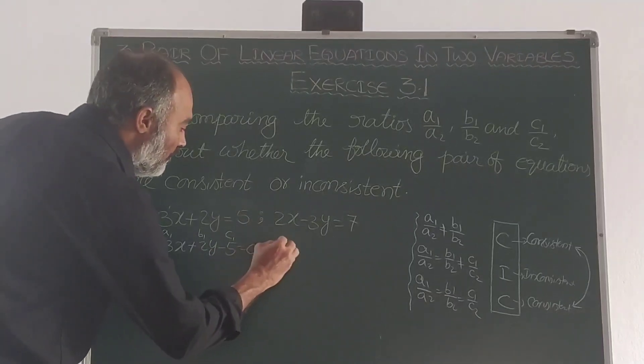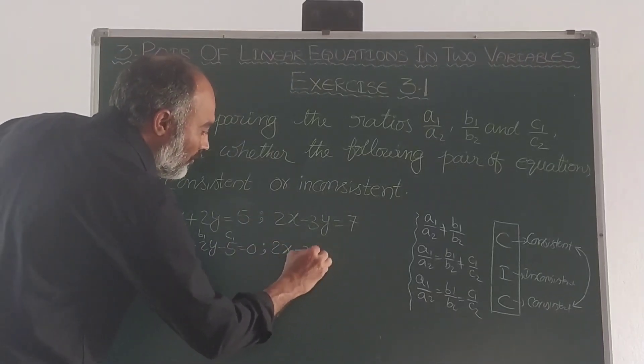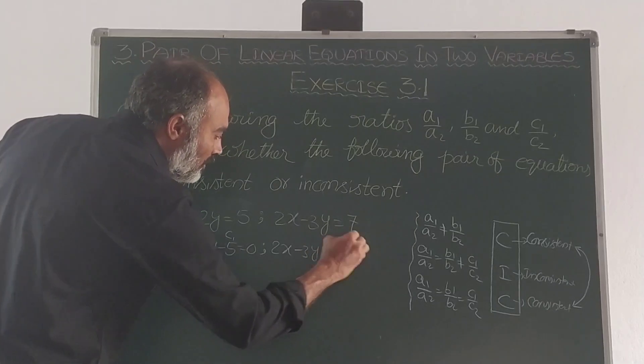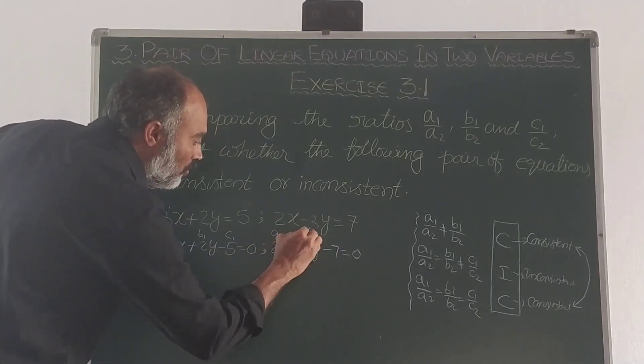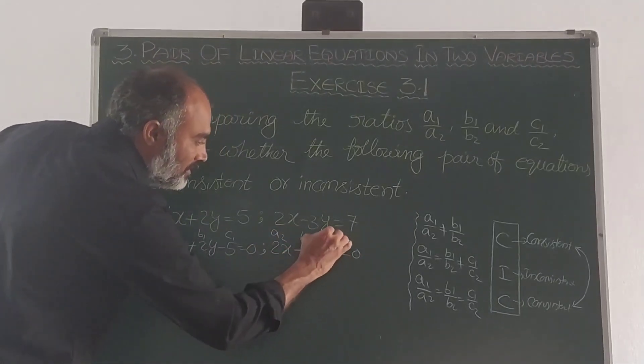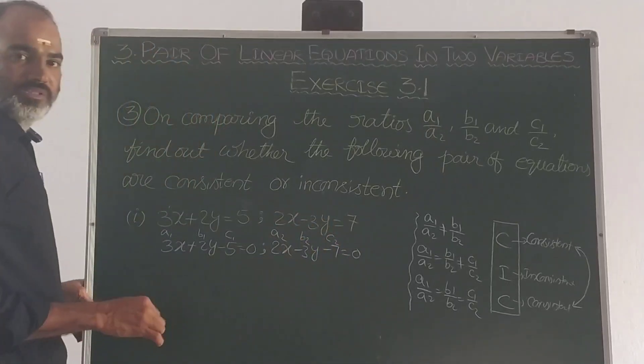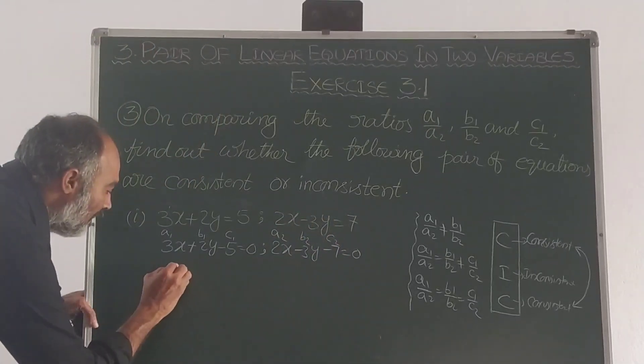Second equation: 2x minus 3y minus 7 equal to 0. So a2 is 2, b2 is minus 3, and c2 is minus 7.